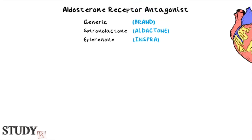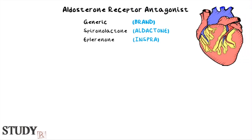Hello guys, my name is Moses and welcome to another episode of StudyRx. I will primarily focus on how the class of aldosterone receptor antagonists — drugs like spironolactone and eplerenone — work in heart failure patients.